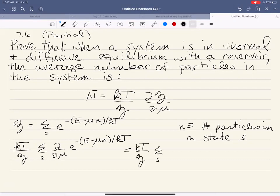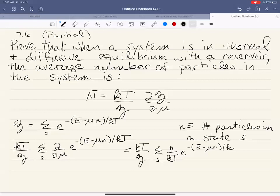So that means that what we end up with is the kT over z outside of our summation again. And then we have n over kT, and then times our Gibbs factor again.